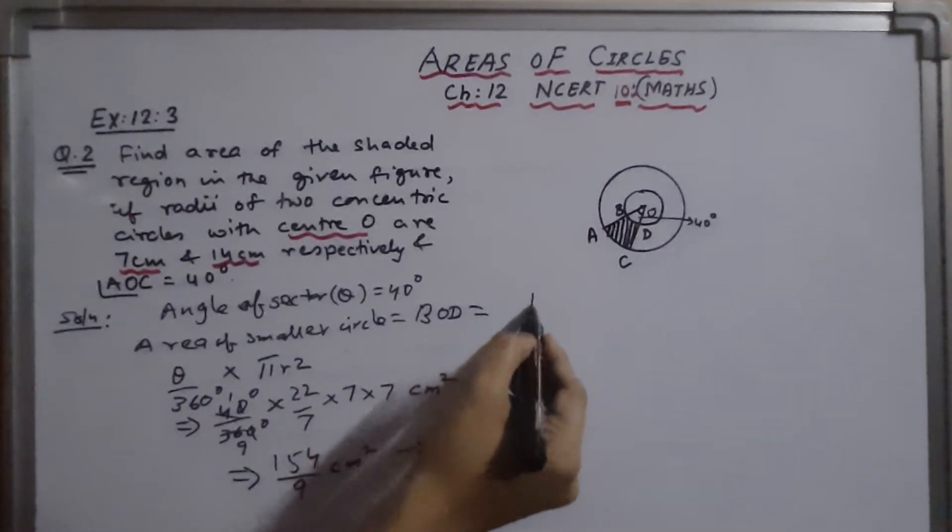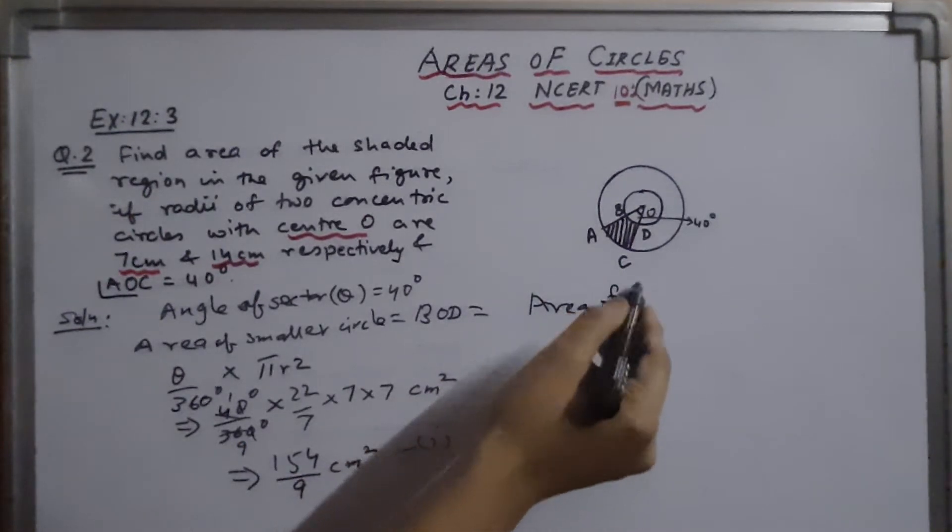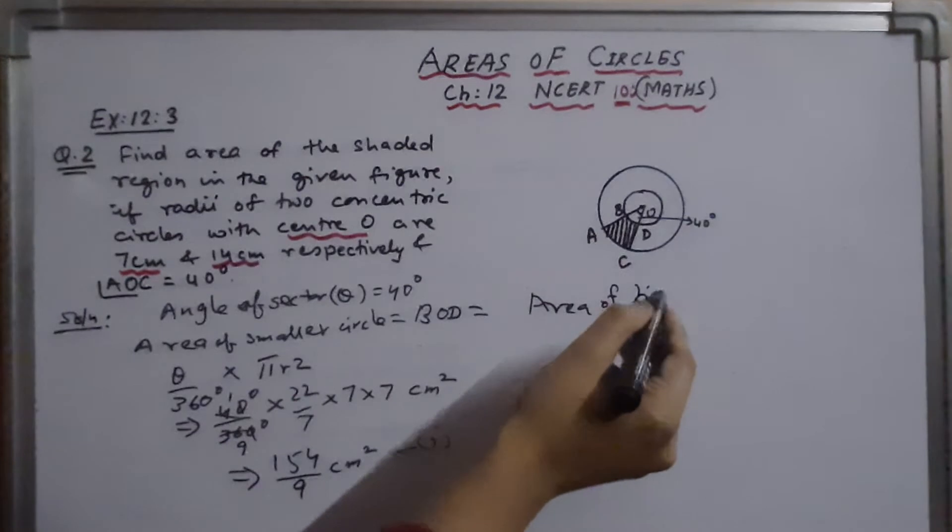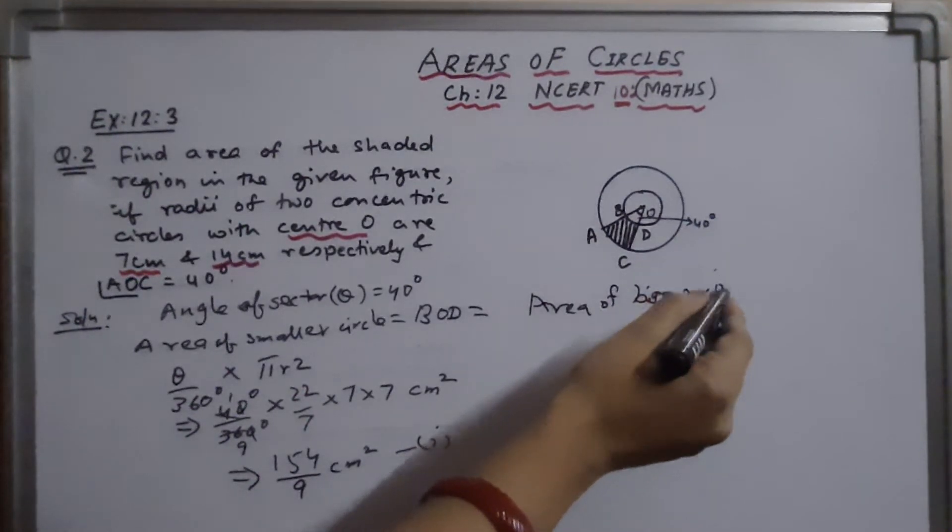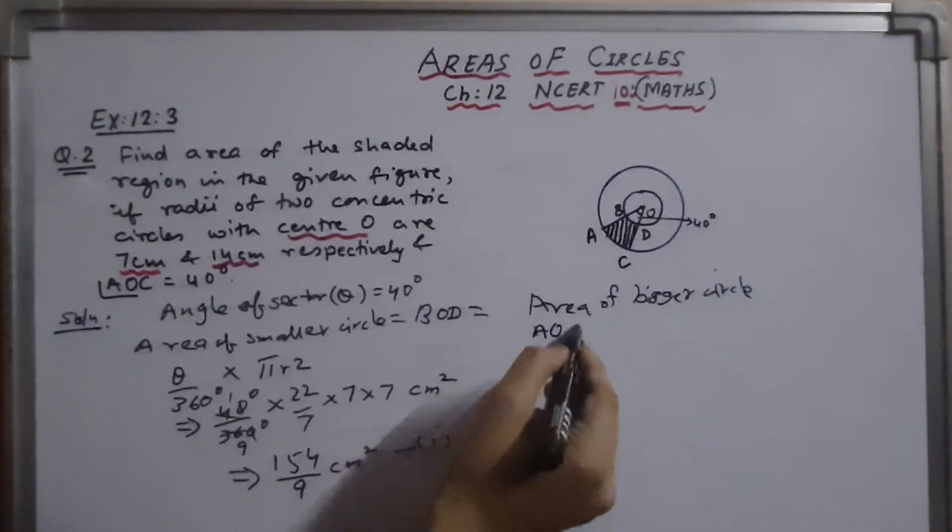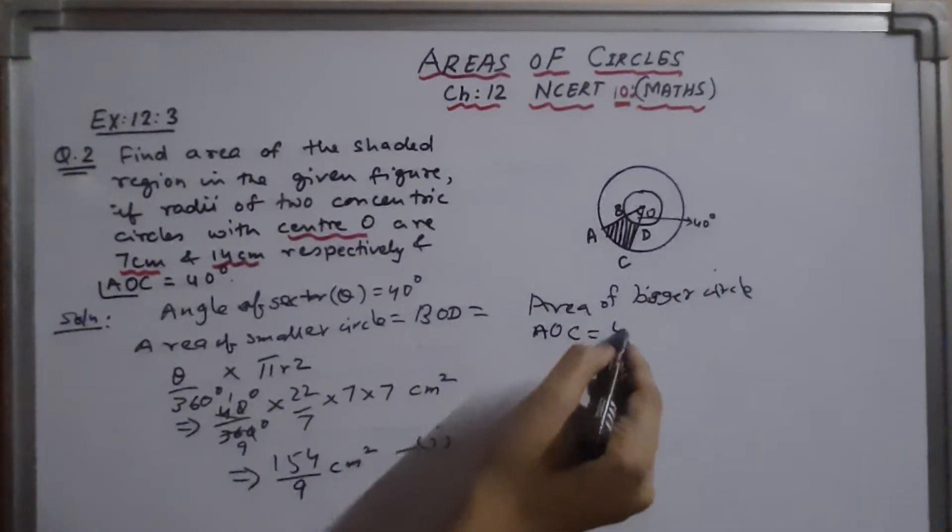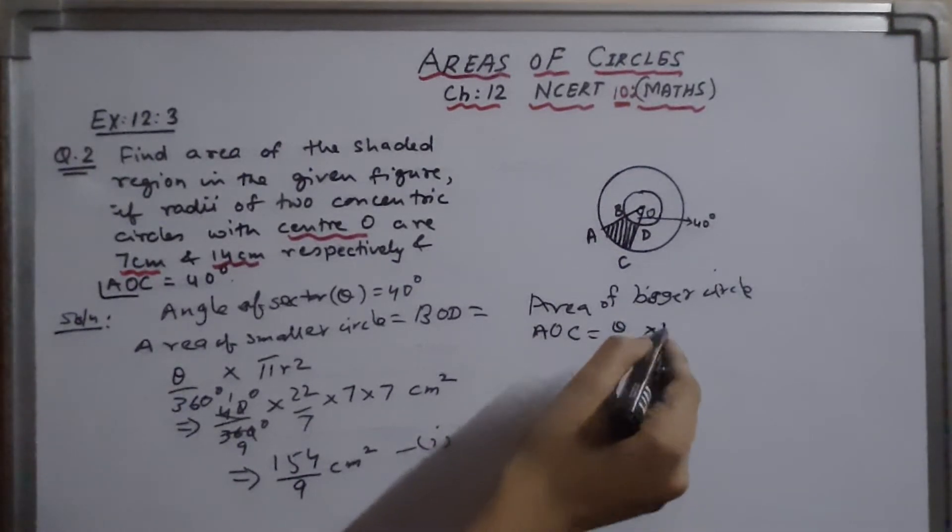Now secondly, area of bigger circle. Area of bigger circle, that is AOC. It will be theta by 360 degrees into pi R square.